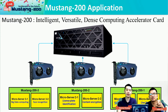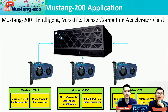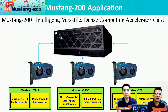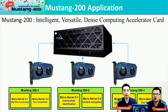Looking at the architecture, you can see there are three Mustang 200 cards inside the server, each in charge of a different kind of application. Mustang 200 is an intelligent, versatile, dense computing accelerator card. Besides this, you can also do clustering, HA (high availability) function, and load balancing with Mustang 200.